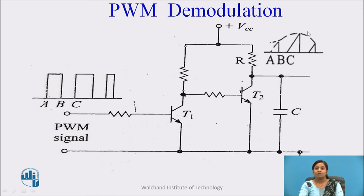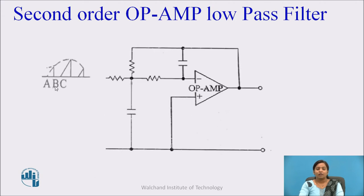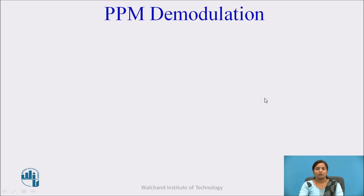The envelope of the sawtooth wave is proportional to the modulating signal, and the information is present in this envelope. When this sawtooth wave is given as input to the second-order op-amp low-pass filter, the op-amp circuit filters the signal — it passes all low frequencies and removes higher frequencies. At the output of this low-pass filter, we get the modulating signal. In this way, the PWM signal is demodulated.